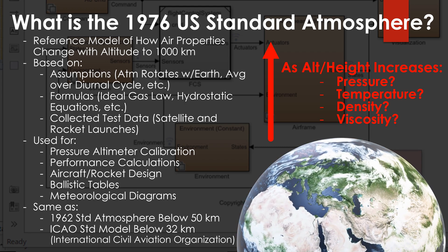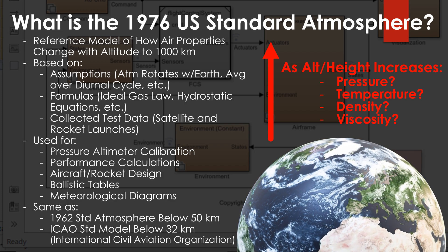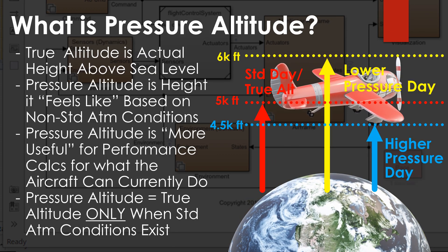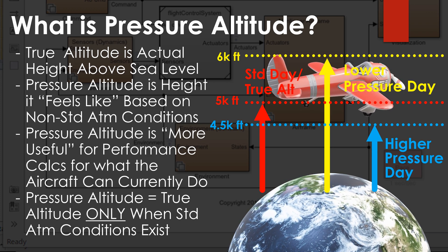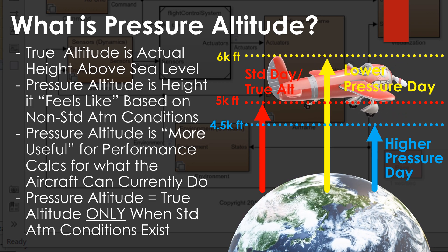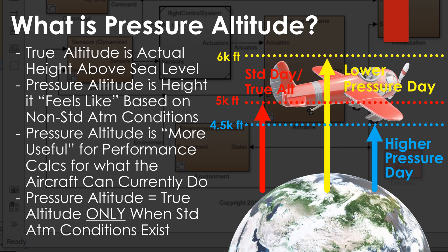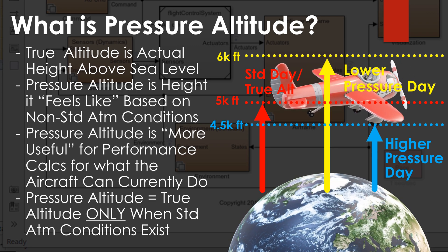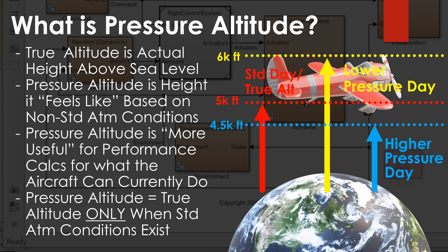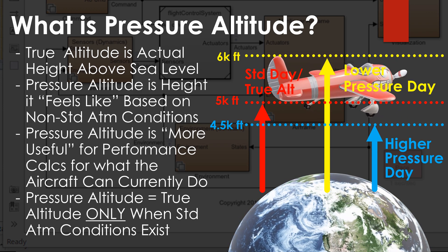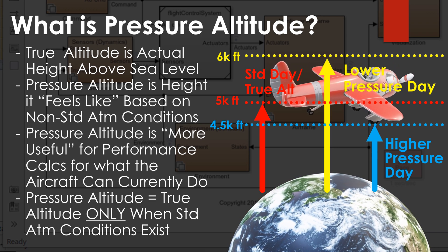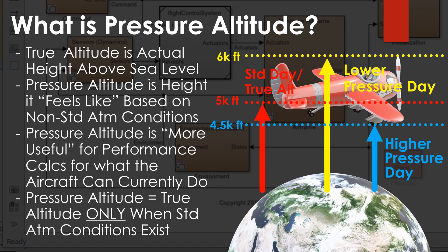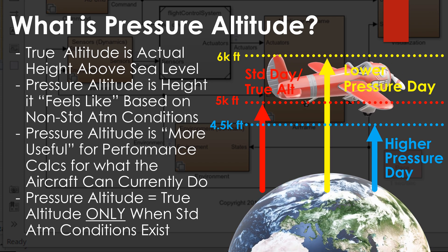Since we're talking about pressure altitude, the standard atmospheric model tells us that pressure decreases with altitude. True altitude is the height you're flying above sea level. Pressure altitude is the height it feels like you're flying at based on the actual non-standard atmospheric conditions of that day or local area. Pressure altitude is more useful for performance calculations. The only time pressure altitude and true altitude are the same is when standard conditions exist locally where you're flying.